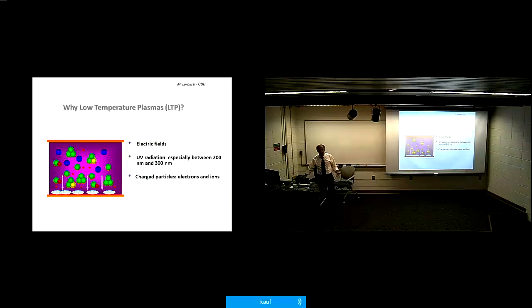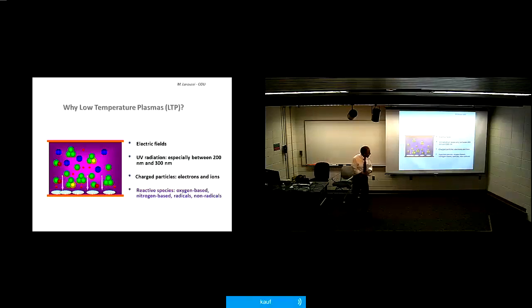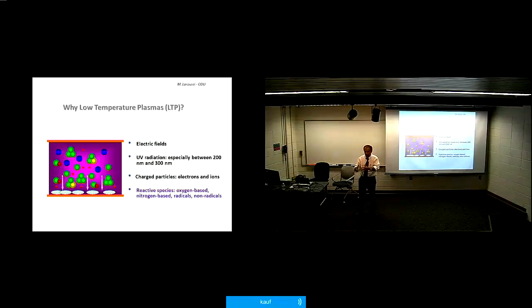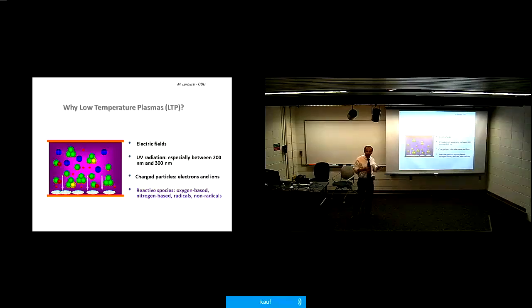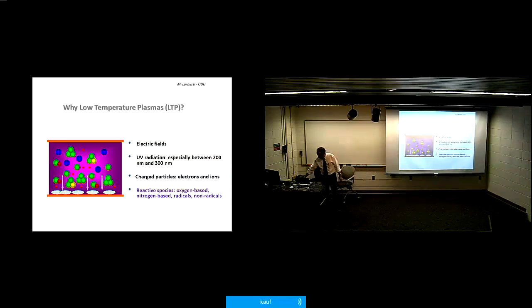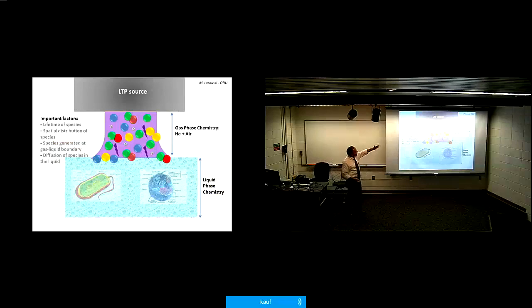Low temperature plasmas have many components: electric fields, UV radiation especially between 200 and 300 nanometers, charged particles — electrons and ions — and most importantly, reactive species generated by chemistry in the plasma. Because we use air, which has oxygen and nitrogen, we can generate oxygen-based and nitrogen-based reactive species, which are very important for biomedical applications.